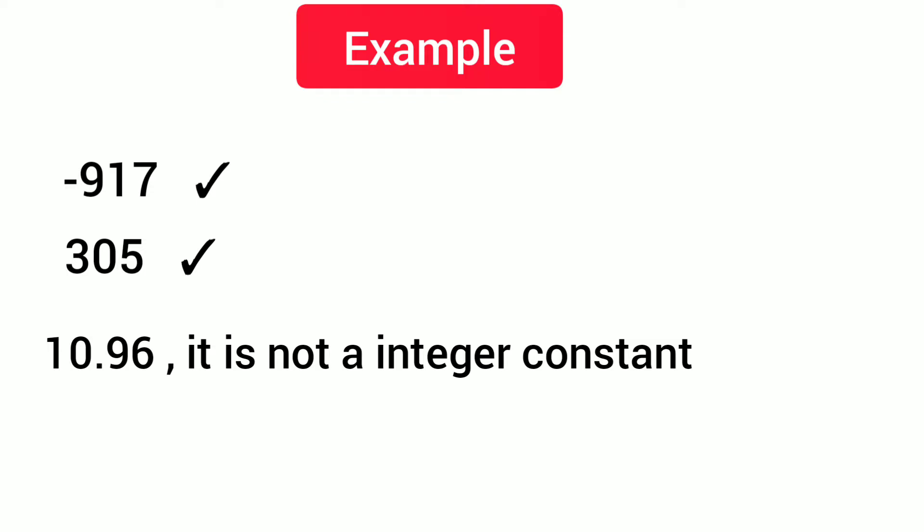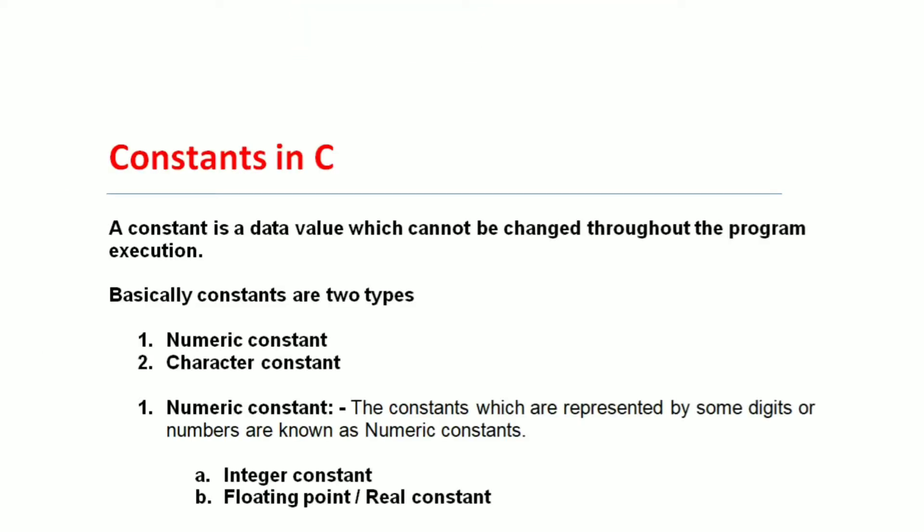In integer constants, negative values are allowed. Now, floating point or real constant — the constant which is represented by some floating point or real number, or in exponential form of a number, is known as a floating point constant. For example, 10.5 is a floating point constant.